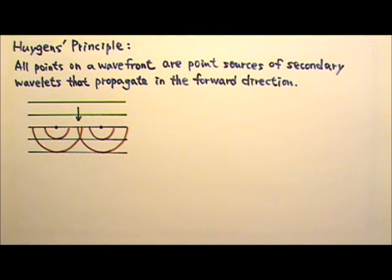Huygens Principle states that all points on a wavefront are point sources of secondary wavelets that propagate in the forward direction. The new wavefront is the surface tangent to those secondary wavelets.